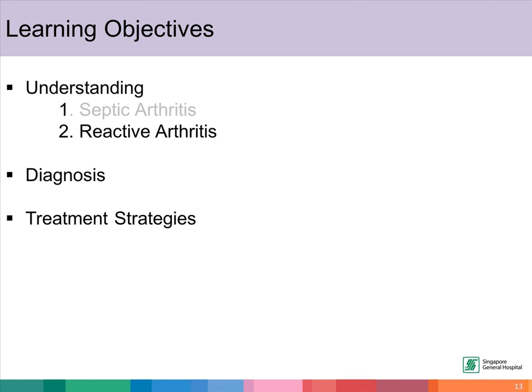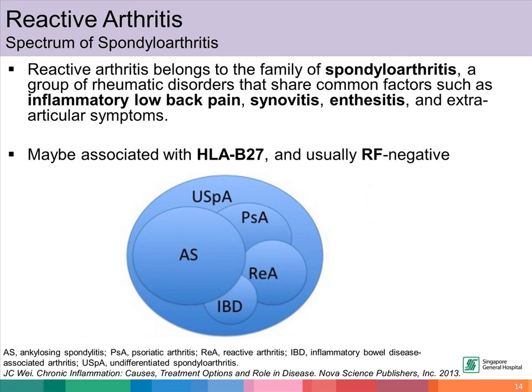Next, we will talk about reactive arthritis. Reactive arthritis belongs to the family of spondyloarthritis. This is a group of rheumatic disorders that share common factors such as inflammatory lower back pain, synovitis, enthesitis, and various extra-articular symptoms. Spondyloarthritis may or may not be associated with the presence of HLA-B27, and they are usually rheumatoid factor negative.